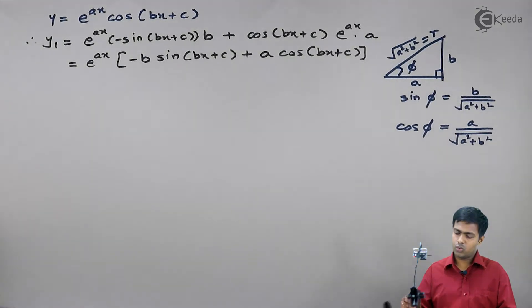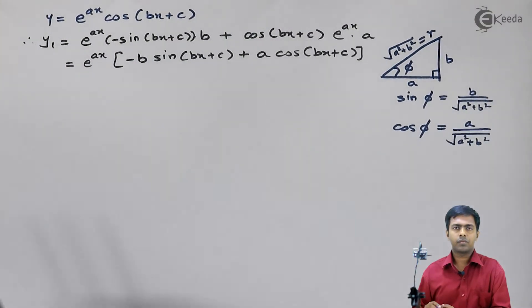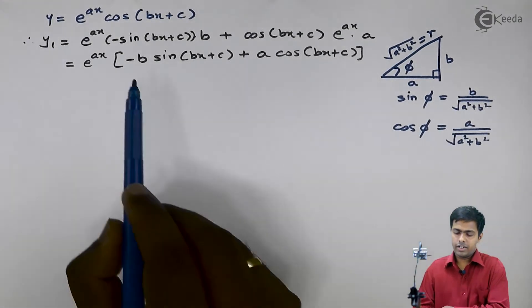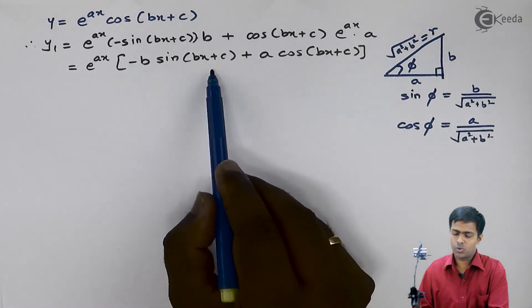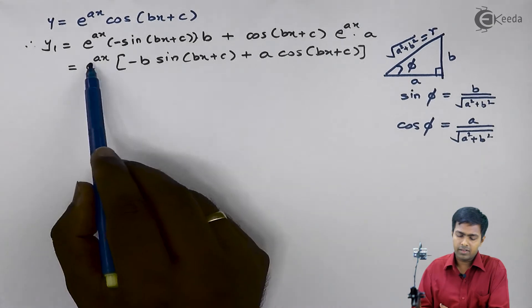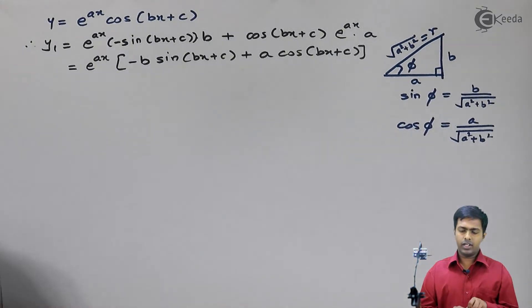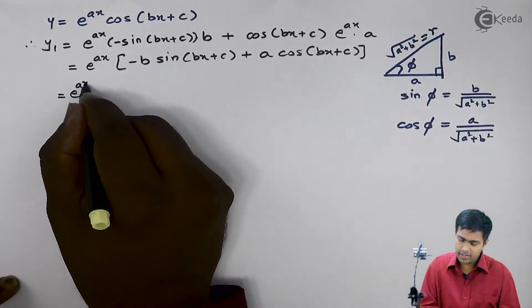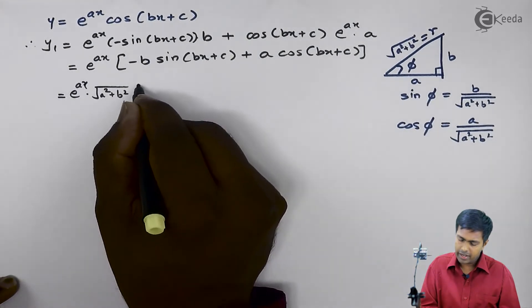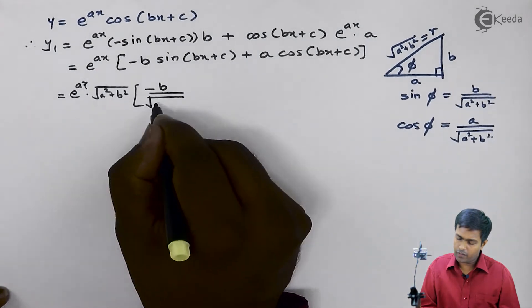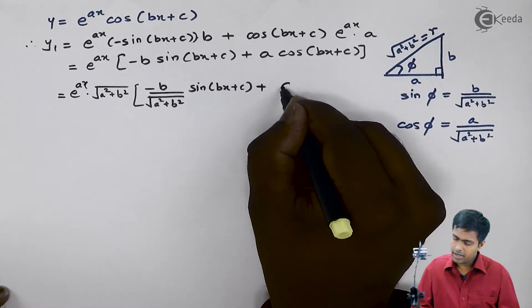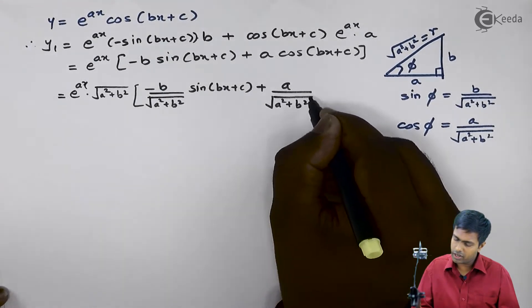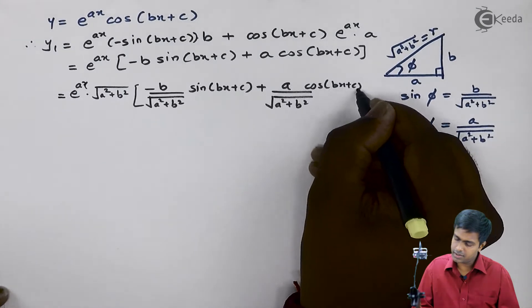Now we are going to make use of these two formulas to reduce the expression. To use them, we divide b and a by root of a squared plus b squared, and compensate by multiplying the whole term by root of a squared plus b squared. So y1 becomes e raised to ax into root of a squared plus b squared, inside the bracket: minus b upon root of a squared plus b squared times sin of bx plus c, plus a upon root of a squared plus b squared times cos of bx plus c.